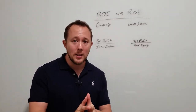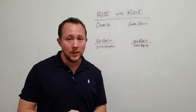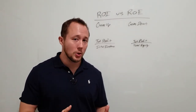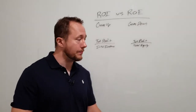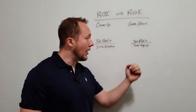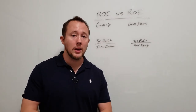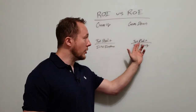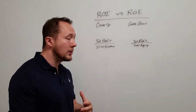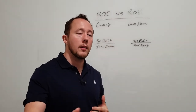Return on investment, as you probably know, is the total profit divided by your initial investment. So if you profit $10,000 and your initial investment is $100,000, your total ROI is 10%. ROE is your return on equity and it's your total profit divided by your total equity. So if you just purchased a property and you spent $100,000 and you earn $10,000, your ROE is also 10%.